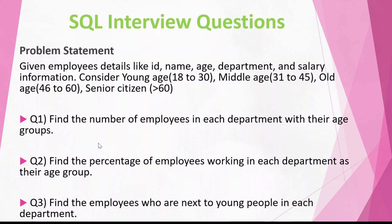The first problem is: find the number of employees in each department with their age group. So it is asking us to return data department-wise and age-group-wise. For example, in departments A, B, C, we need to find how many young, middle-aged, old, and senior citizen people are working in each department.